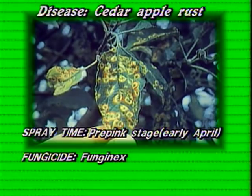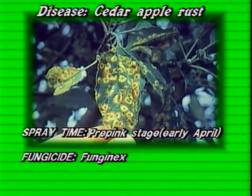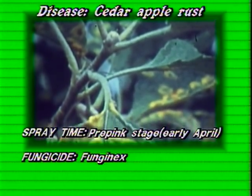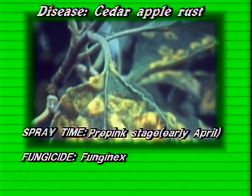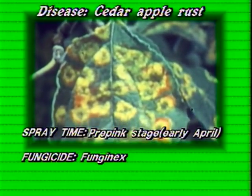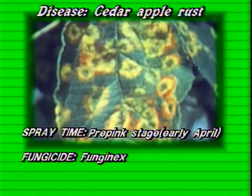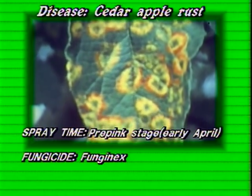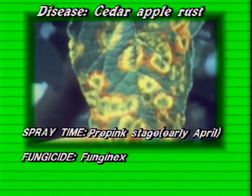So you'd certainly want to spray for those. And in return, the spores formed on the apple infect the cedars — that happens in the middle of summer. Normally we see very little, if any, damage to the cedars. But if you don't protect your susceptible apples and crab apples, you can get a tremendous amount of damage on them. The time to spray for cedar apple rust would be at the pre-pink, just before full bloom.